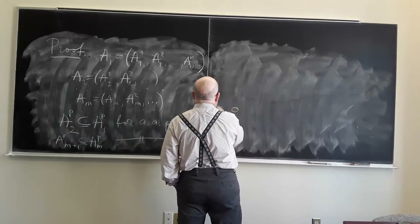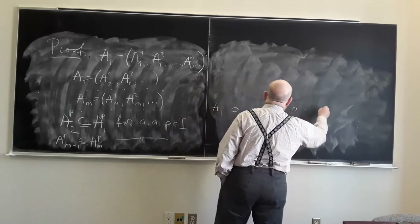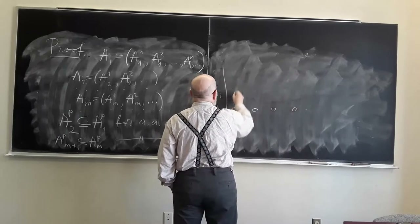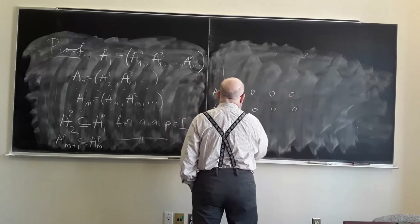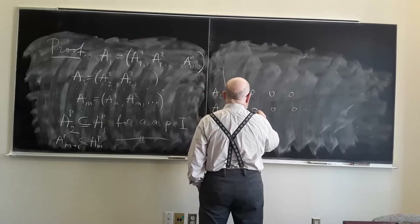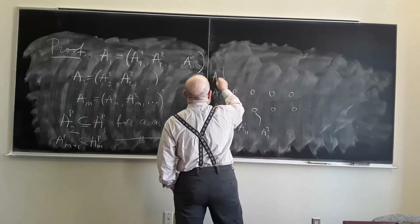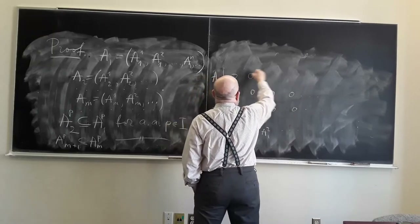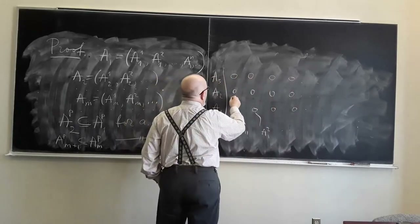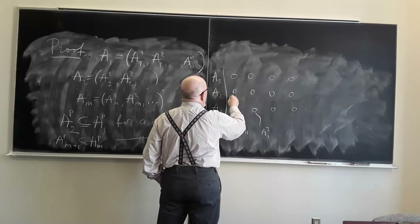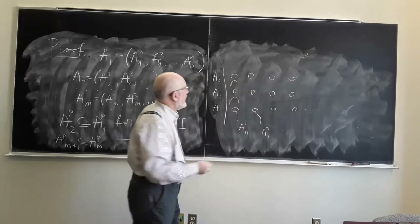Now we can draw the picture. Here is the first sequence A₁ with sets A₁₁, A₁₂, ..., and here is A₂, also a sequence of sets, and A₃ likewise — so that we have a diagram where each row is always a subset of the row above, almost always.